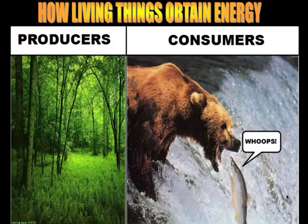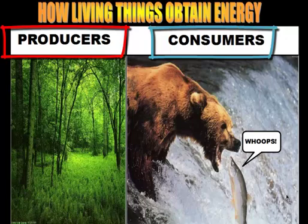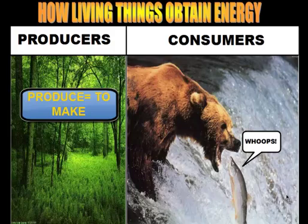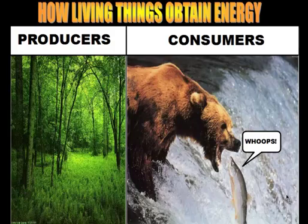There are two groups of organisms based on how they obtain their food. We have a group called the producers, and we also have a group called the consumers. Producers make their own food — that's what 'produce' means — so they make their own food without having to get nutrients from other organisms. However, consumers can't do that; they actually have to go out and find food and eat it to get the nutrients that they need.